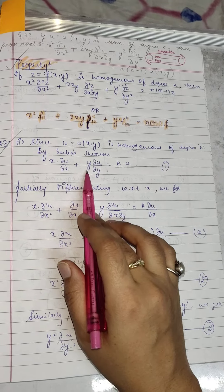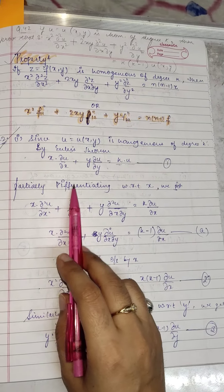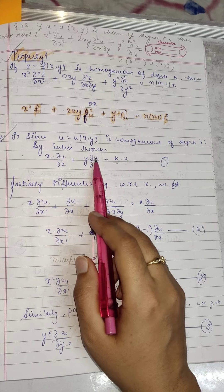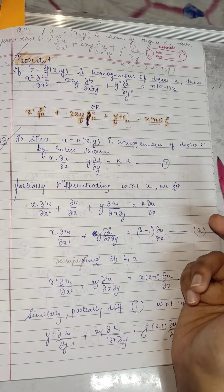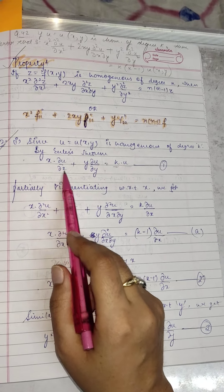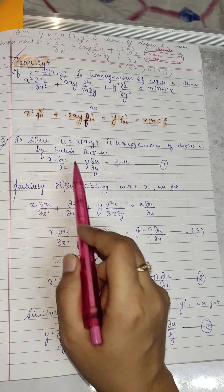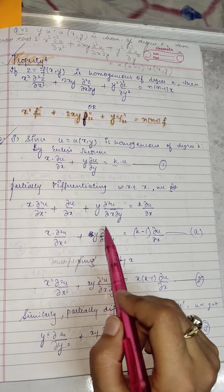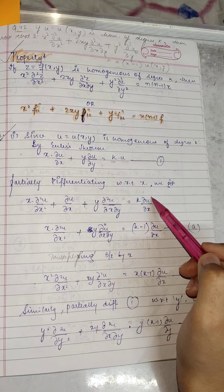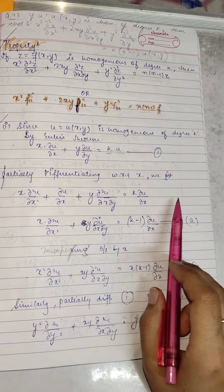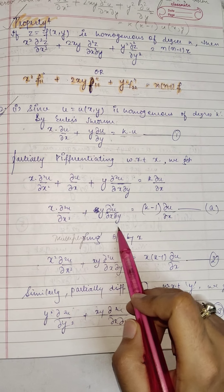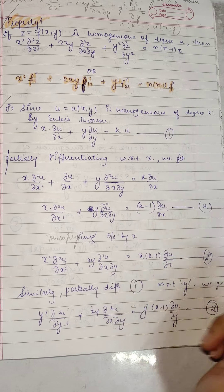Partially differentiating equation 1 with respect to x — applying the product rule — you get x · ∂²u/∂x² + ∂u/∂x + y · ∂²u/∂x∂y = k · ∂u/∂x. Taking ∂u/∂x to one side gives: x · ∂²u/∂x² + y · ∂²u/∂x∂y = (k−1) · ∂u/∂x.